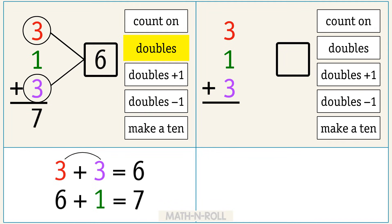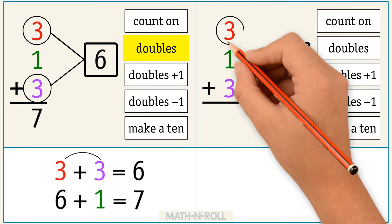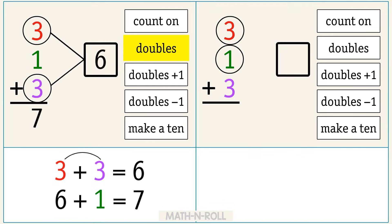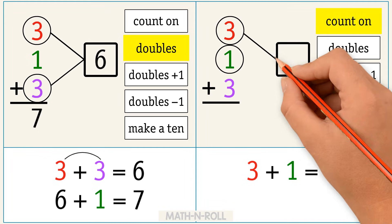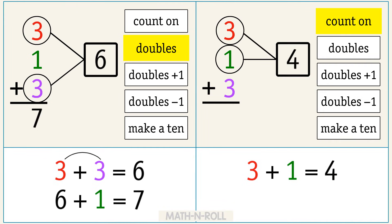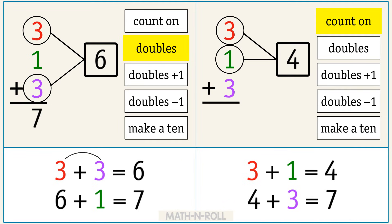Let's do the same problem using a different strategy. Circle 3 and 1. Let's use the count on strategy. 3 plus 1 equals 4. Now add 3 to 4 to get 7. 3 plus 1 plus 3 equals 7.